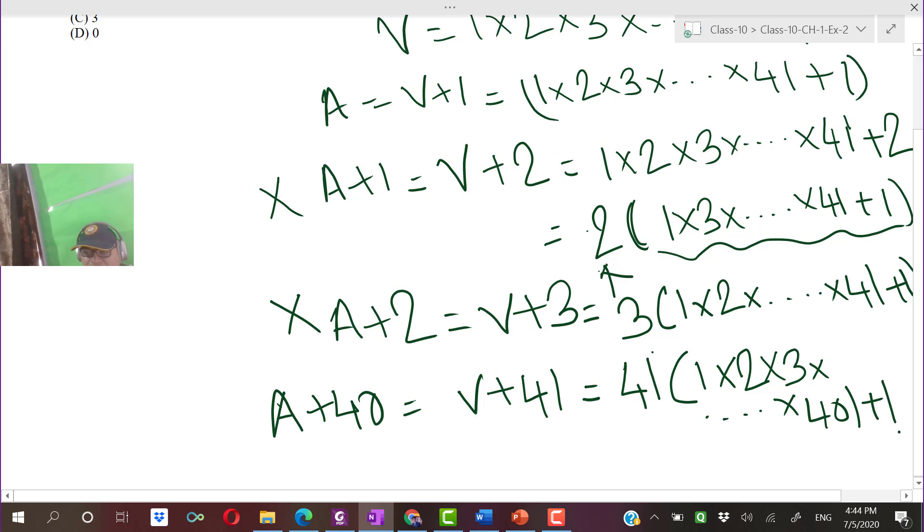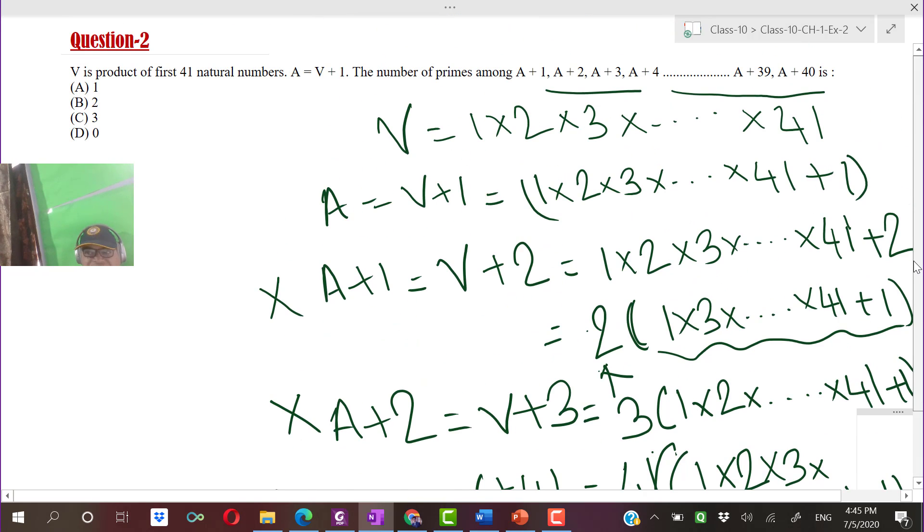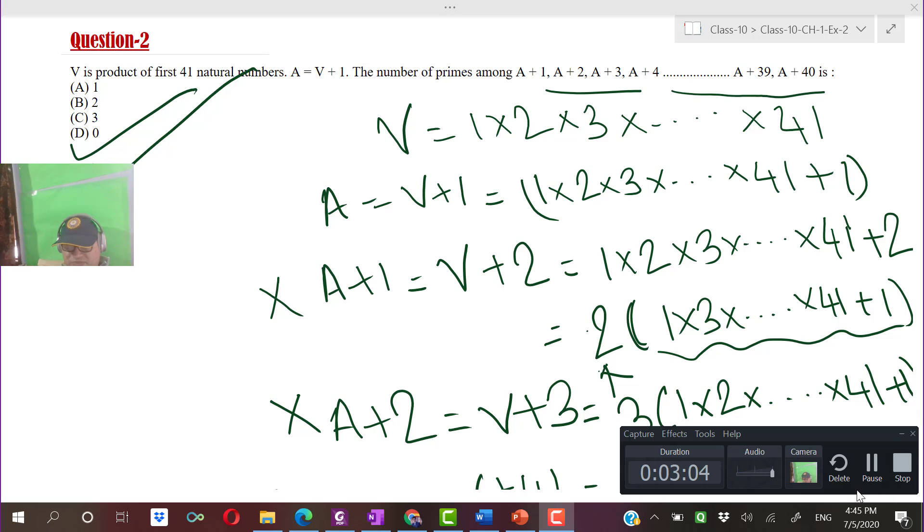Finally, I can say that among A plus 1 to A plus 40, none of the numbers is a prime number. Therefore, my answer will be 0. The total number of prime numbers will be 0. Thank you.